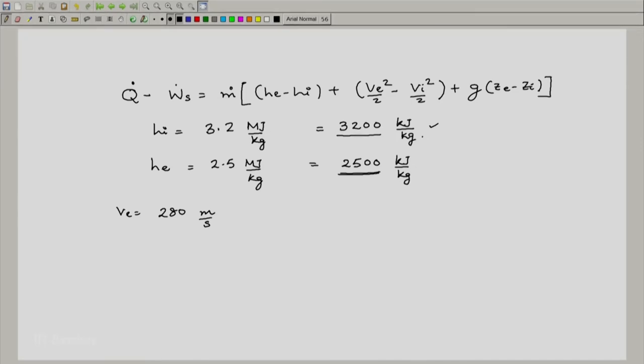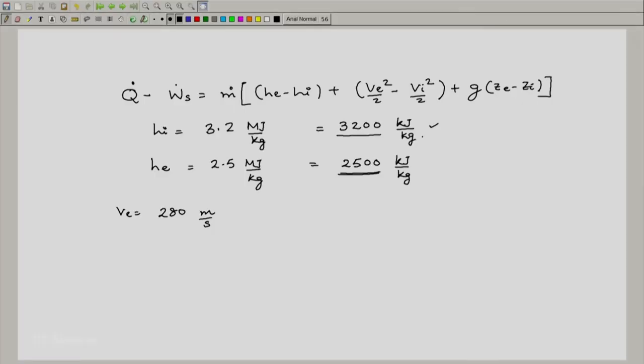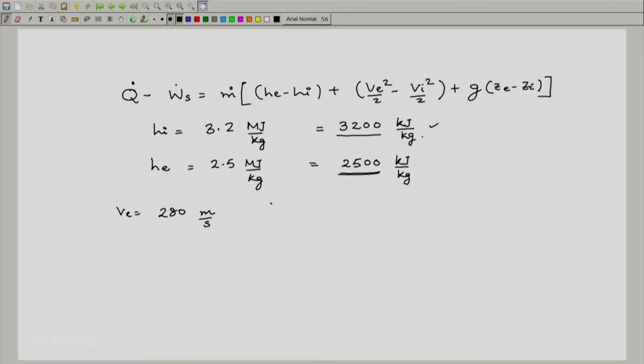Notice what we had mentioned in our previous snippet: only when you start getting velocities around 300, that is much more than 100 meters per second, do those kinetic energy terms start getting significant. Now 280 meters per second is reasonably significant. So if we calculate v_e^2/2, this will turn out to be 39200 joules per kg, which is equal to 39.2 kilojoules per kg.